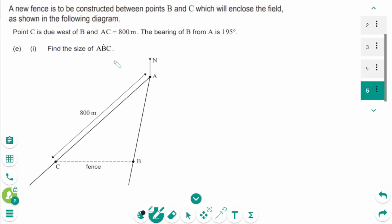Question E. The bearing of B from A is 195 degrees. That means this part is 180 degrees and 15 degrees. And this part is 75 degrees. And angle ABC is 105 degrees.